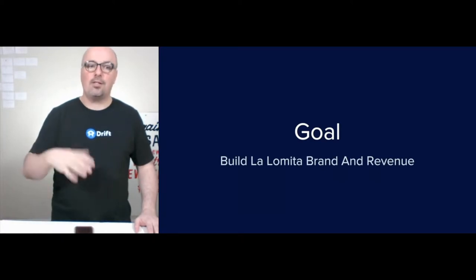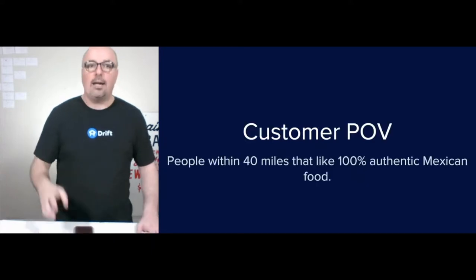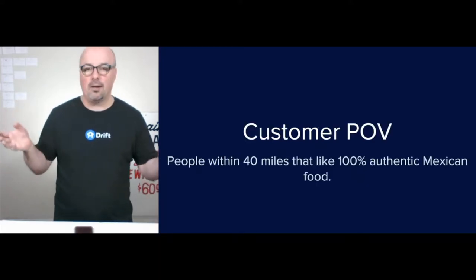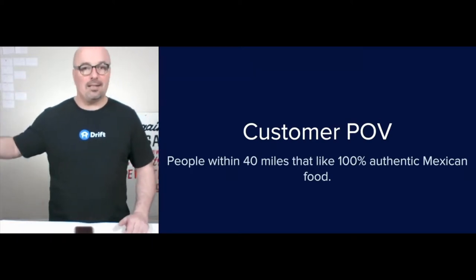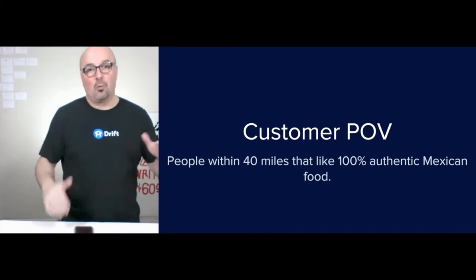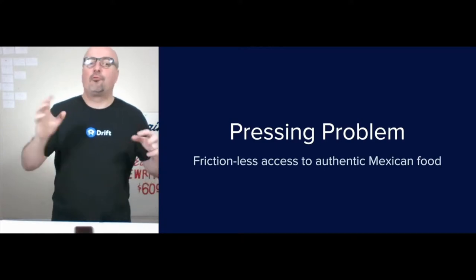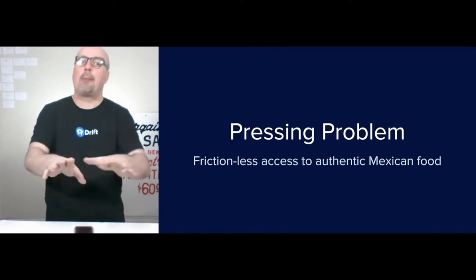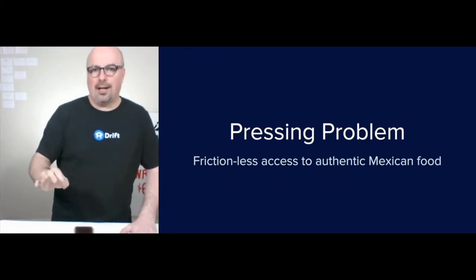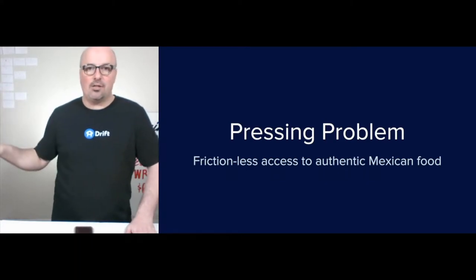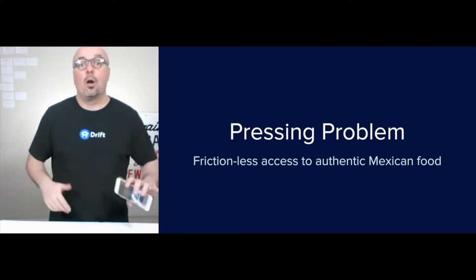The goal of this strategy would be to build the La Lomita brand and revenue. The customer point of view is just folks within 40 miles that like 100% authentic Mexican food. If their idea of the best Mexican food is Taco Bell, they're probably not a candidate. The pressing problem would be frictionless access to authentic Mexican food. They have great food, they have a buffet, and typically the only bottleneck is to pay at the cashier. So allowing people to check out from their phone would just be a smart move.